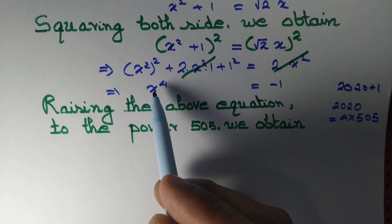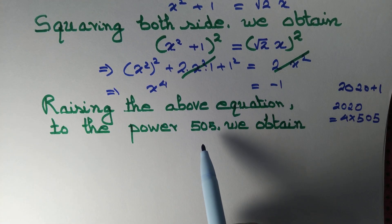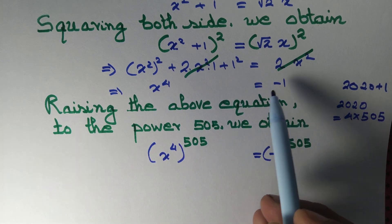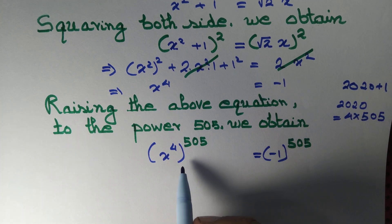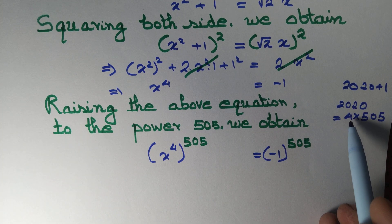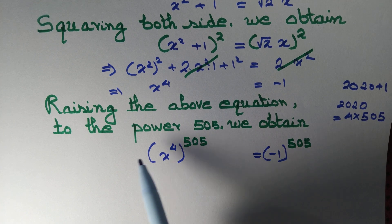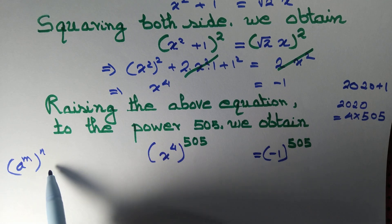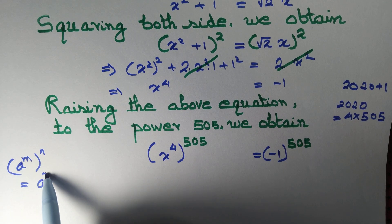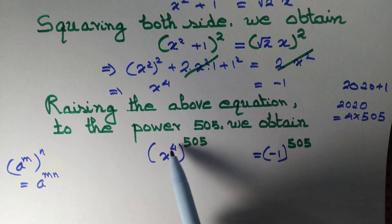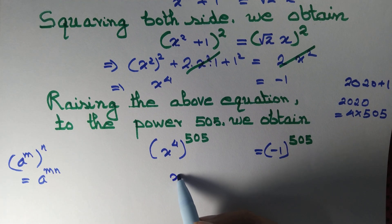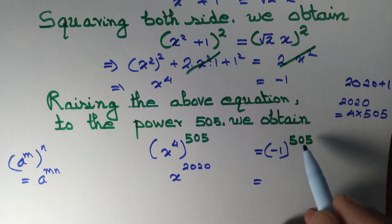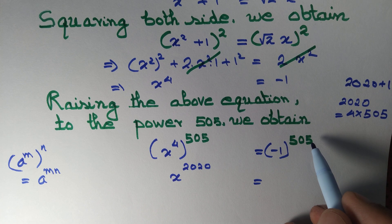So we raise the equation x⁴ = -1 to the power 505. By the law of indices, a to the power m, whole thing to the power n, equals a to the power mn. So multiplying the powers gives us x to the power 2020 equal to minus 1 to the power 505.